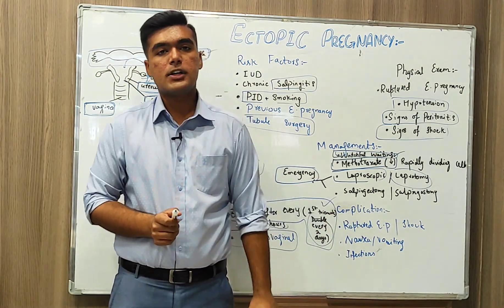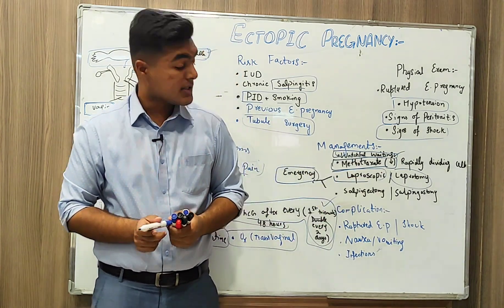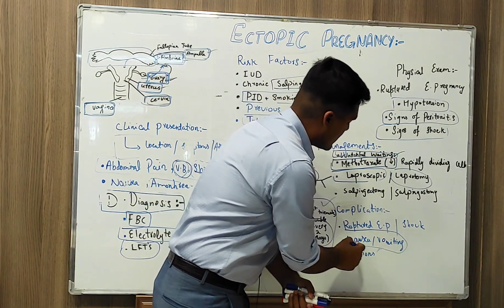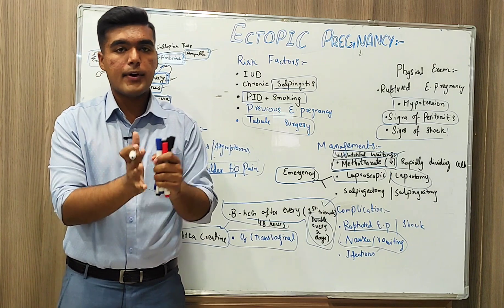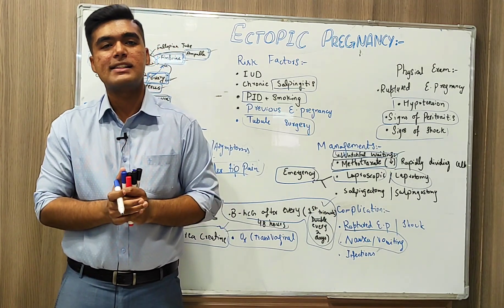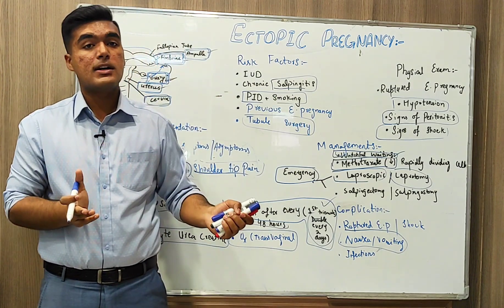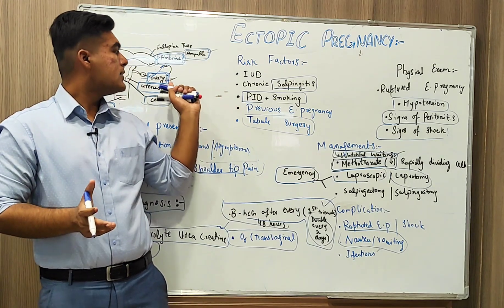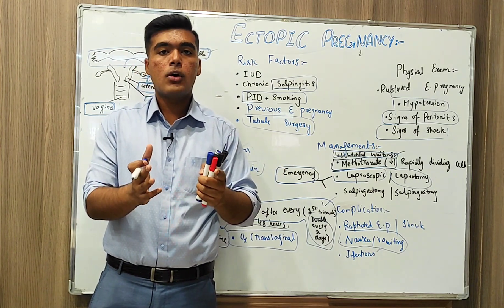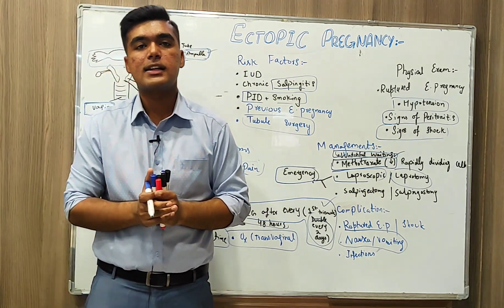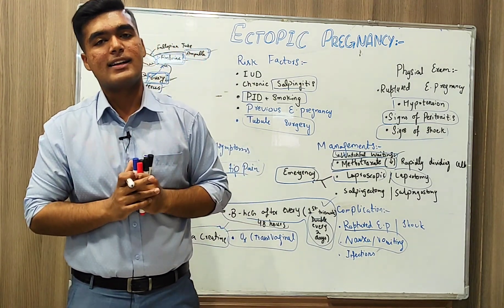Complications include ruptured ectopic pregnancy, shock, post-surgical infections, and nausea and vomiting. To summarize, we identified ectopic pregnancy, how to treat it, differential diagnoses, signs, symptoms, management, and how this abnormality takes place. That is all from the overview of ectopic pregnancy — I hope you all understand it. For any queries, you can directly ask me. Thank you.